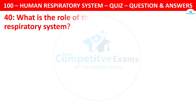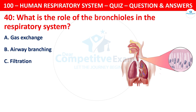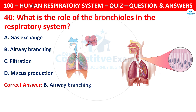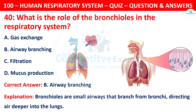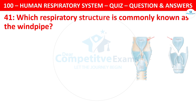Question 40: What is the role of bronchioles in the respiratory system? The options are: gas exchange, airway branching, filtration, or mucus production. The correct answer is B — airway branching. Bronchioles are small airways that branch from the bronchi, directing air deeper into the lungs.